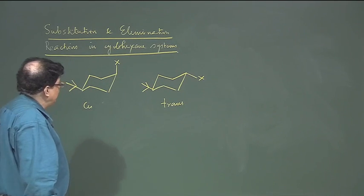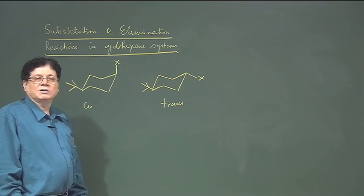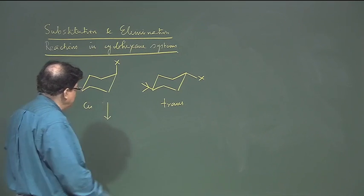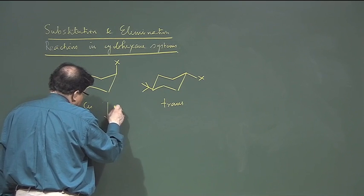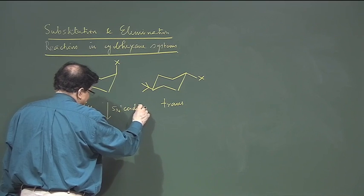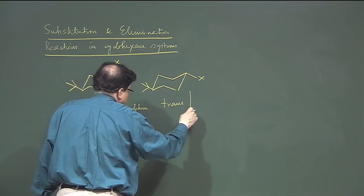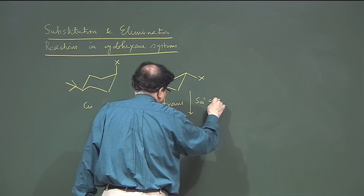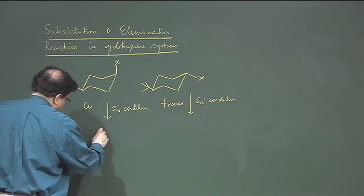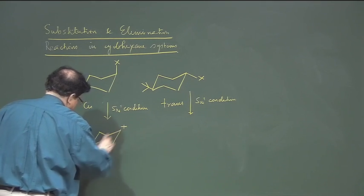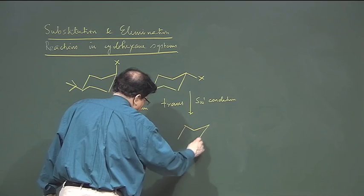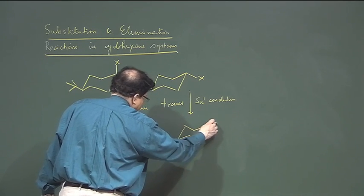We want to study the behavior of these towards substitution reactions. There are different kinds of mechanisms for substitution reactions. Suppose we do it under conditions which favor SN1 — both the cis and trans isomers are subjected to the same SN1 conditions. Under SN1, there will be formation of a carbocation; this is the first step, and it is the same cation that is generated in both cases.